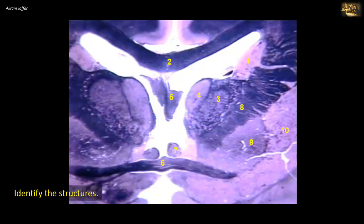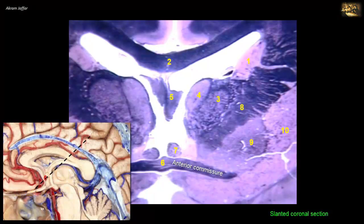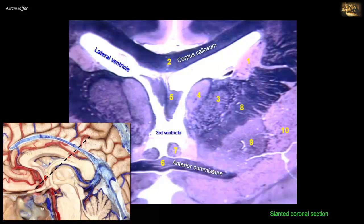Identify the structures. This is a coronal section of the brain at the level of the anterior commissure, number 6. Fibers are stained in blue while gray matter is light pink. The cavities shown are the lateral ventricles on either side and the third ventricle on the midline. The corpus callosum, number 2, a bundle of commissure fibers staining dark blue, forms the roof of the body of the lateral ventricle. The septum pellucidum bridges the interval between the fornix, number 5, and the corpus callosum in the midline.